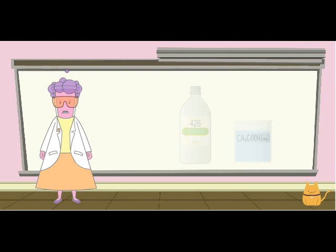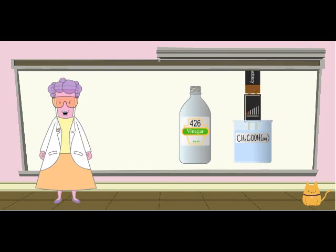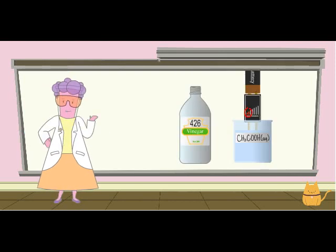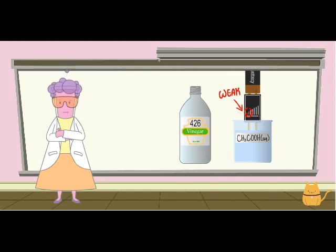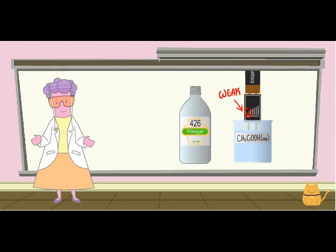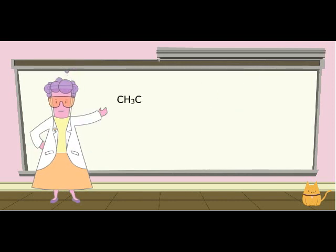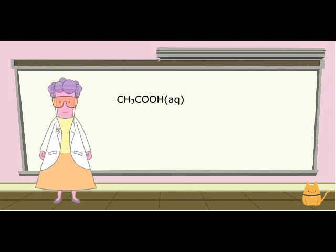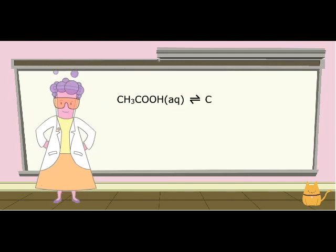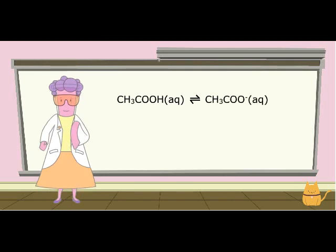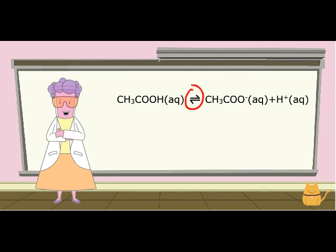Recall that when a weak electrolyte, like acetic acid, dissolves in water, it conducts weakly, which is one piece of evidence that tells us that a small amount of molecules breaks apart into ions. We can write the equation in the following manner: CH3COOHAQ double half arrows CH3COO- AQ plus H+ AQ. The double arrow is used to indicate that the reaction can go in both directions.